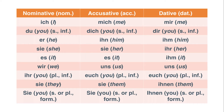And the dative: mir, dir, ihm, ihr, ihm, plural uns, euch, ihnen, and Ihnen — and again, the formal form is capitalized in writing.